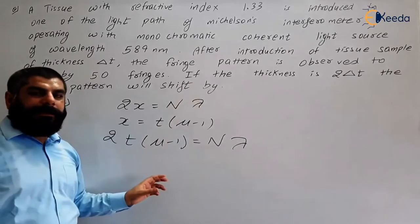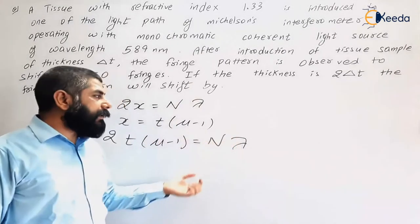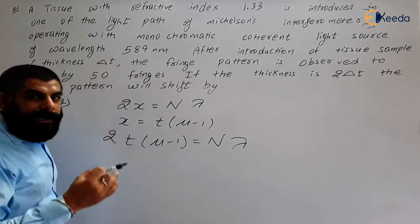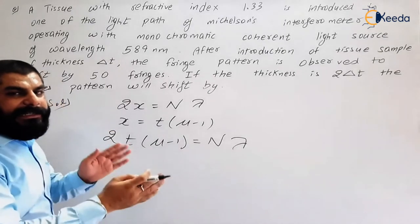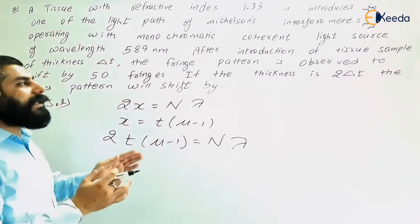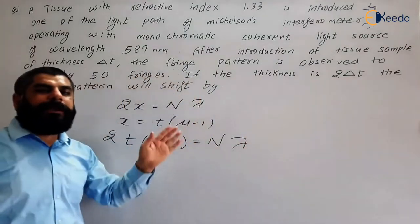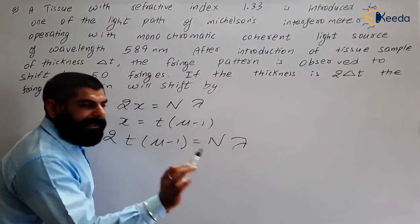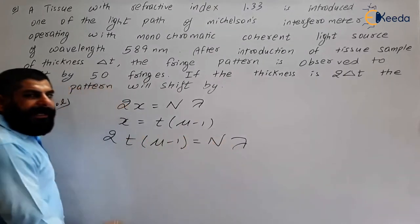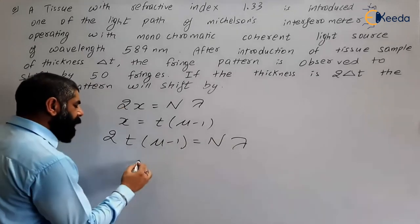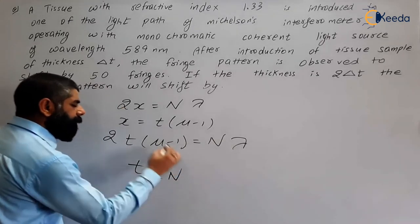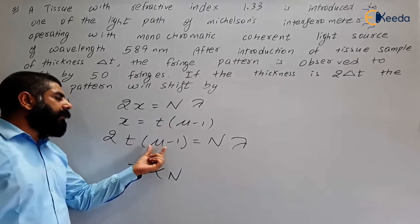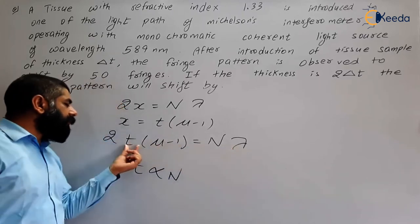In this problem, only the thickness of the material has been changed. From the relation 2t(μ - 1) = nλ, since the refractive index μ is constant and the wavelength λ of the monochromatic light is constant, the thickness t is directly proportional to the number of fringes n.